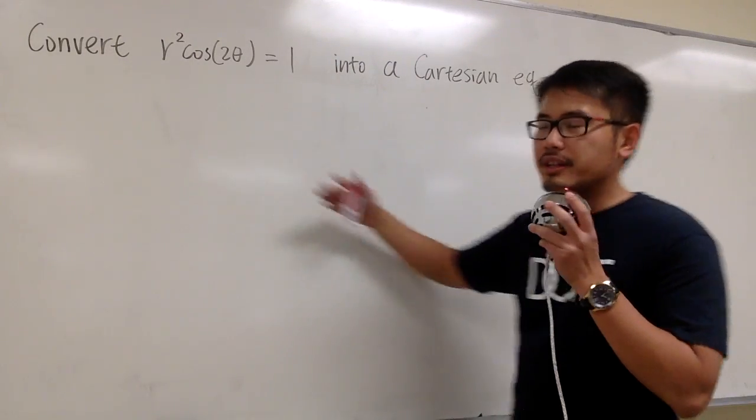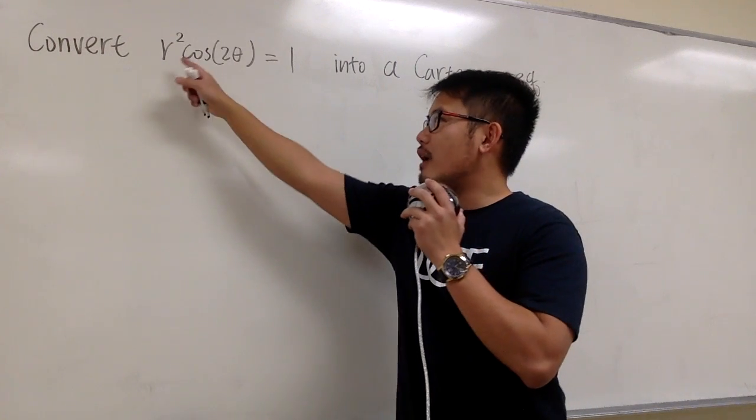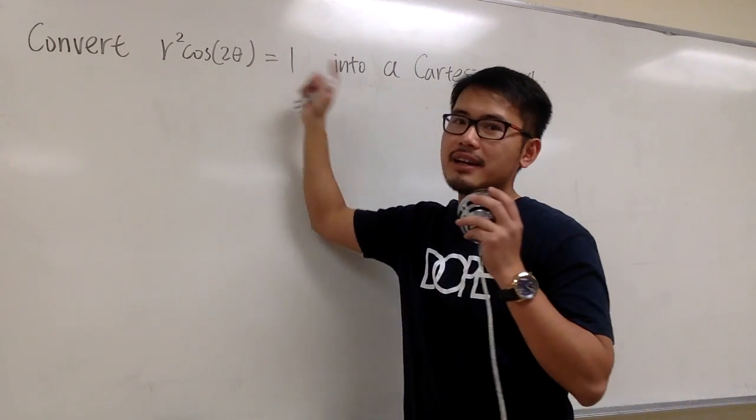We are going to convert this polar equation into a Cartesian equation. Here we have r squared times cosine of 2 theta equals 1.